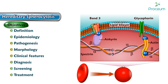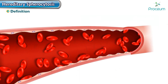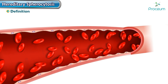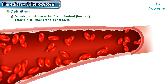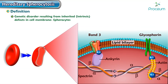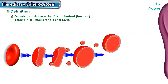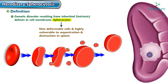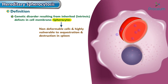Welcome to another video in hematology. In this video we're going to discuss a very important hemolytic anemia: hereditary spherocytosis. Hereditary spherocytosis is a genetic disorder resulting from inherited defects in the red blood cell membrane, leading to the formation of spherocytes. These spherocytes are non-deformable cells, highly vulnerable to sequestration and destruction in the spleen.